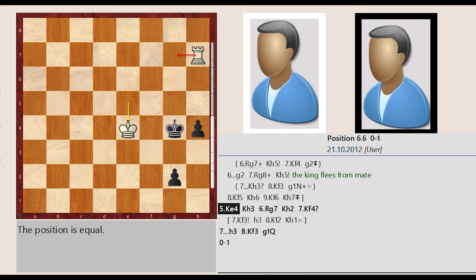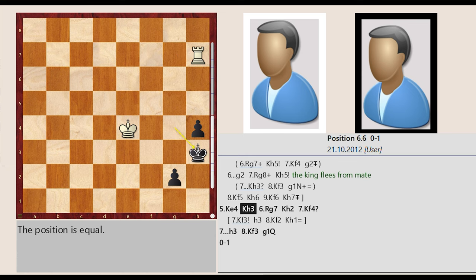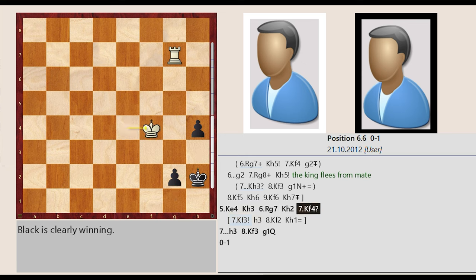King e5 e4, King g4 h3, Rook h7 g7, King h3 h2, King e4 f4, H4 h3, King f4 f3, G2 g1.